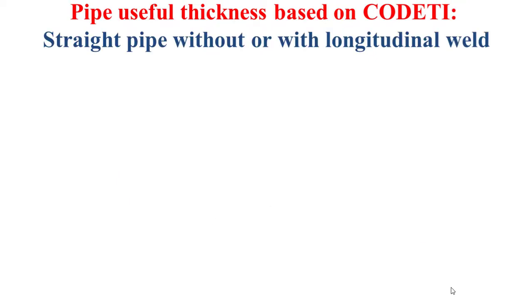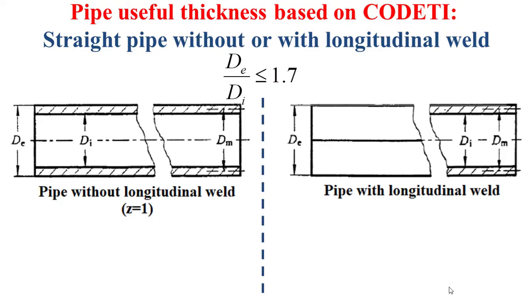Now, let's explain how to determine the useful thickness of the pipe based on CODETI, for the case of straight pipe without or with longitudinal welt. This case is considered when the external diameter of the pipe divided by the internal diameter does not exceed 1.7.